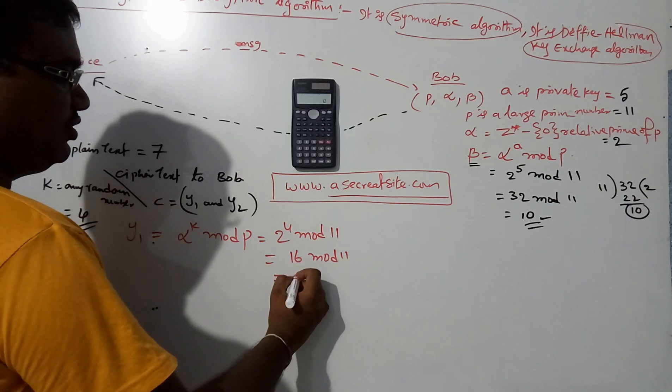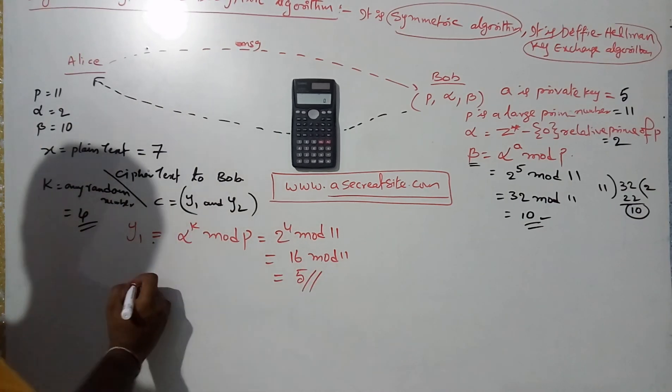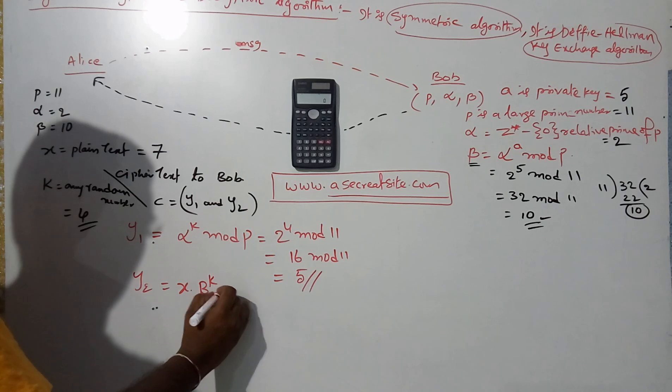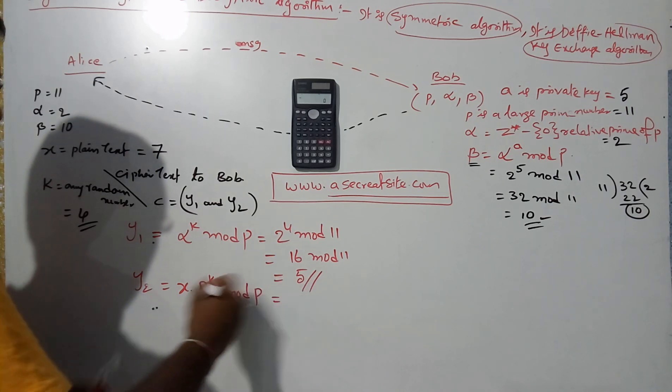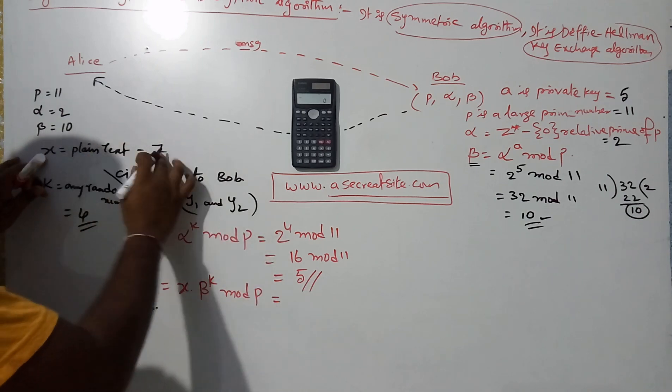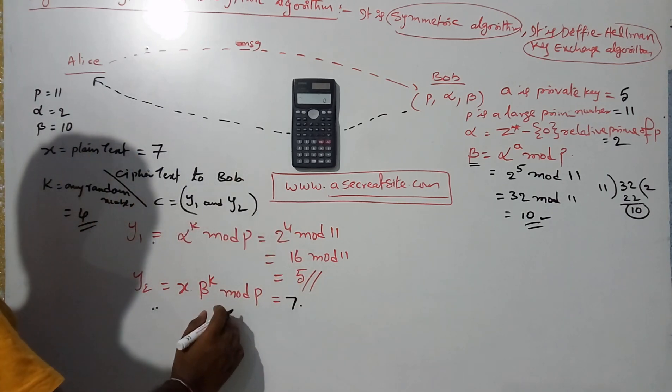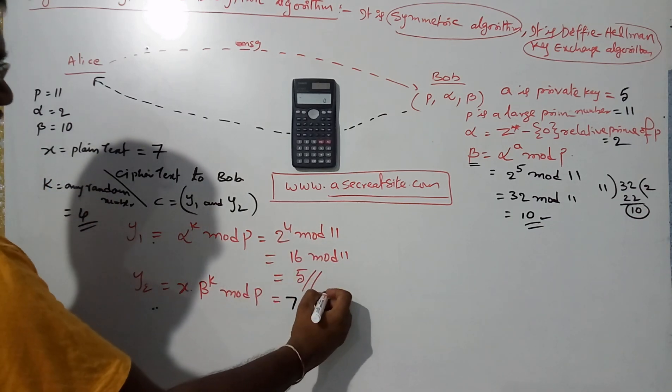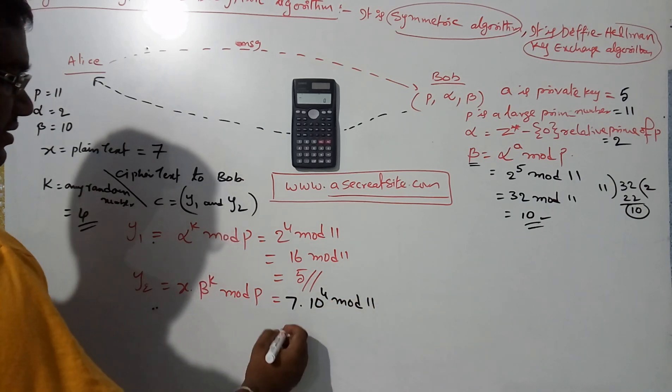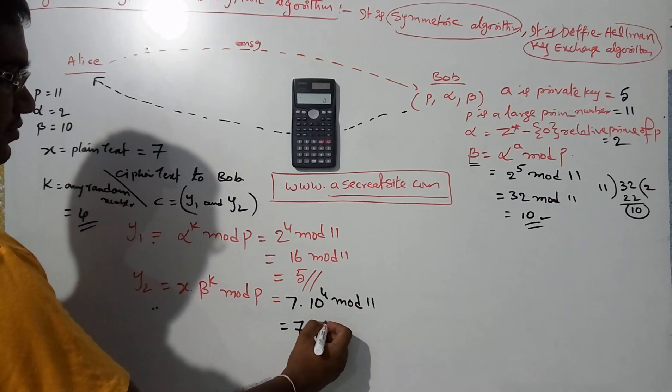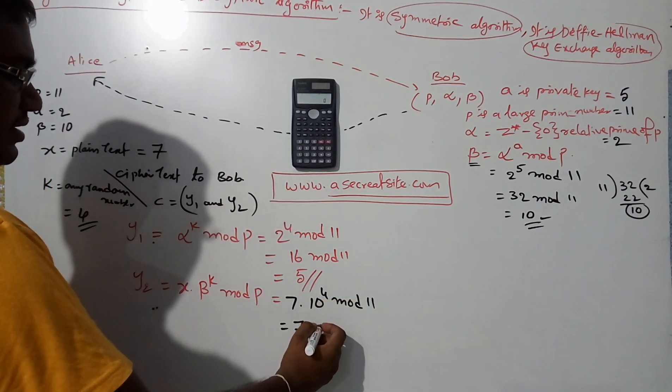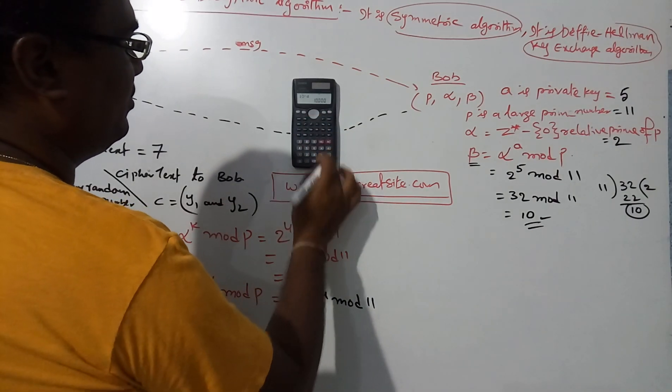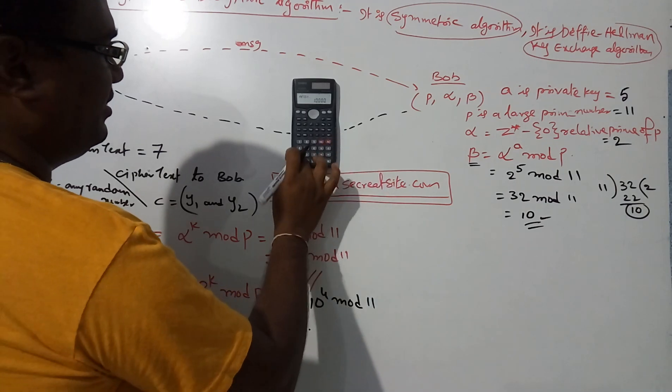If you divide 16 by 11 you get remainder 5. Similarly, y2 is equal to x into beta power k mod p. That is equal to x plaintext value is 7 into beta equals 10 to the power k which is 4, mod 11. That equals 7 into 10 to the power 4.